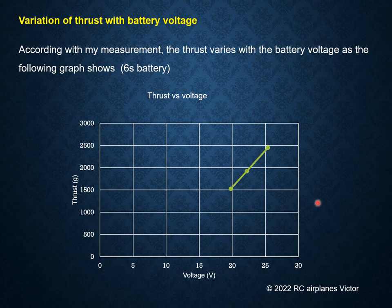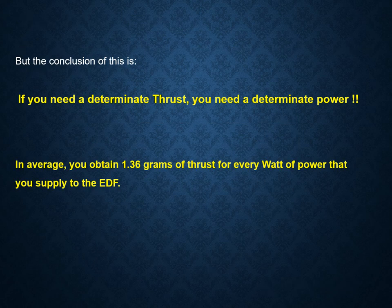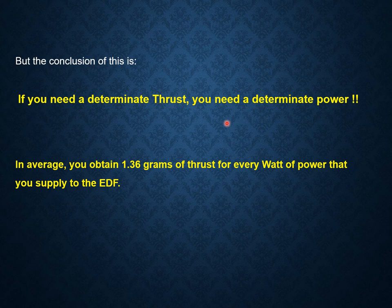This graph shows how the thrust diminishes as the voltage diminishes. The important conclusion is this: if you need to determine thrust, you need to determine power. This is very important because once you determine your thrust, you automatically have the power that you need for the selection. Another interesting fact is that on average, you obtain 1.36 grams of thrust for every watt of power that you supply to the EDF.